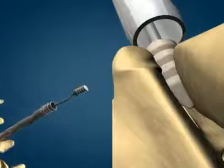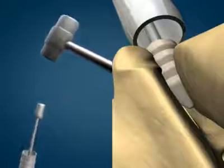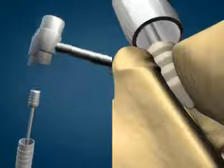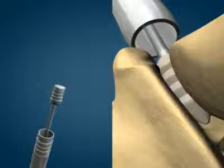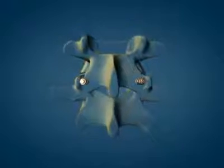If NuFix is not inserted deeply enough at the end of the procedure, it can be inserted more deeply by using the facet sound through dilation tube three. The same steps are repeated for the other facet joint located at that level.